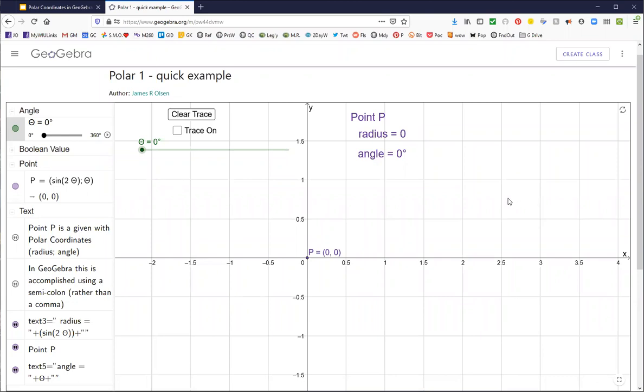This is a simple example. I have a point P that's going to be moving around the coordinate axes, and P is defined by this little r value, sine of 2 theta, and the angle is theta.